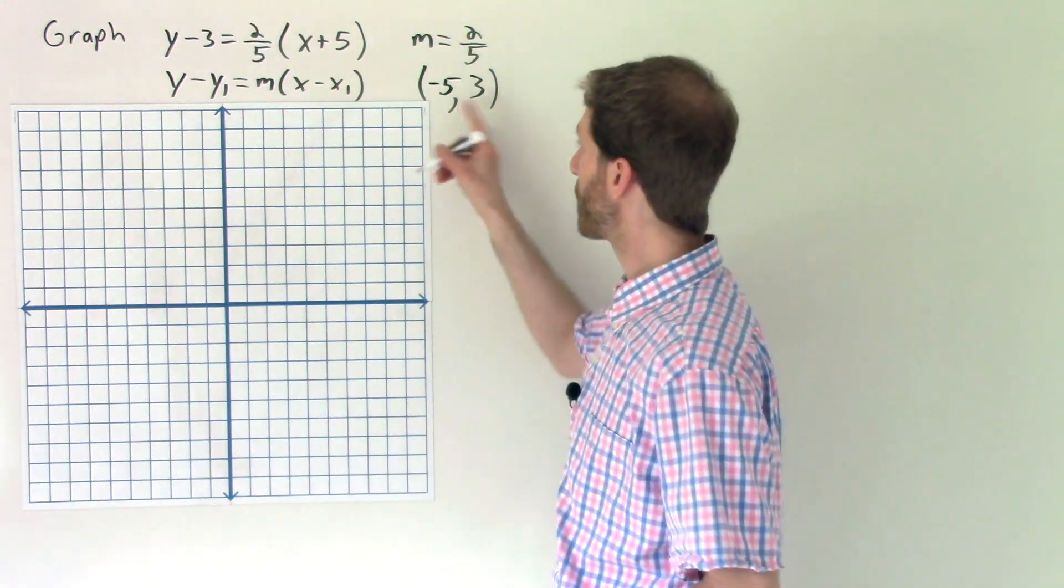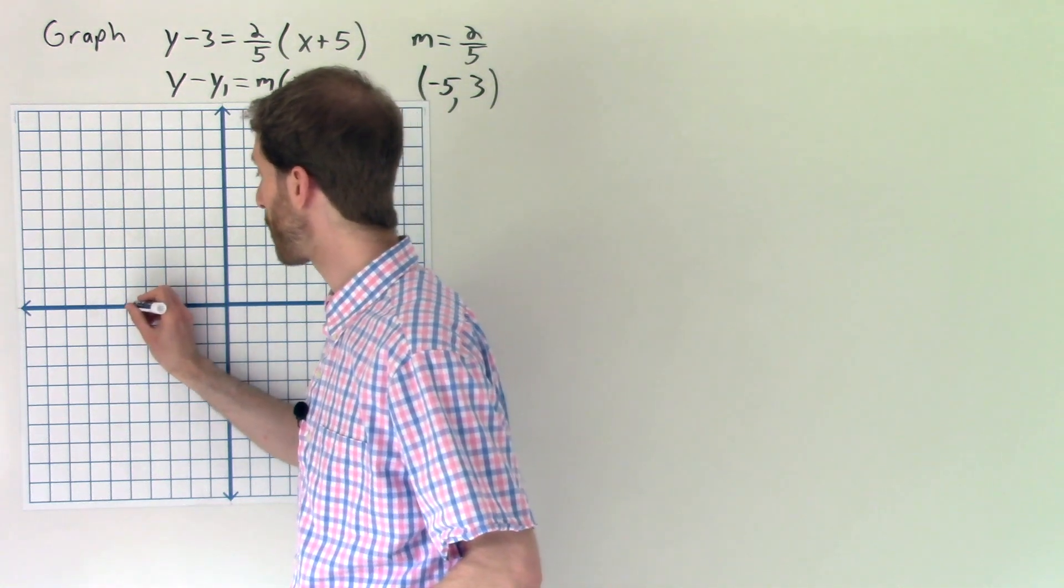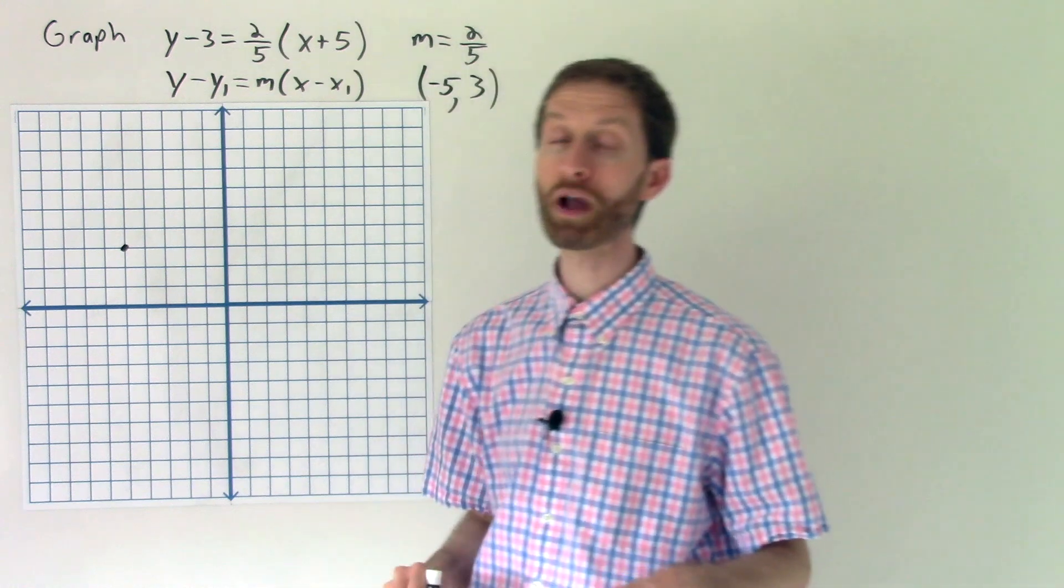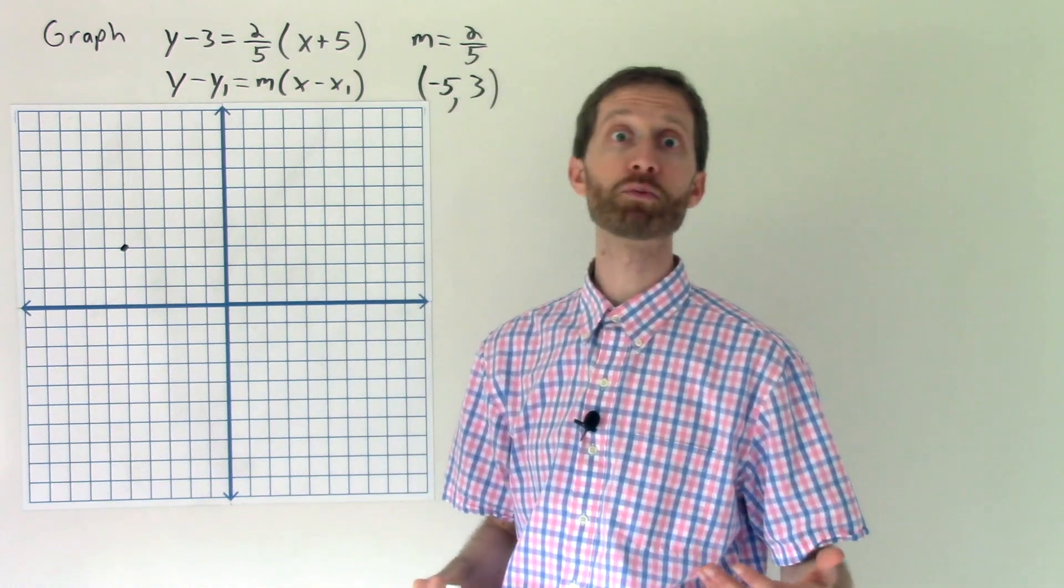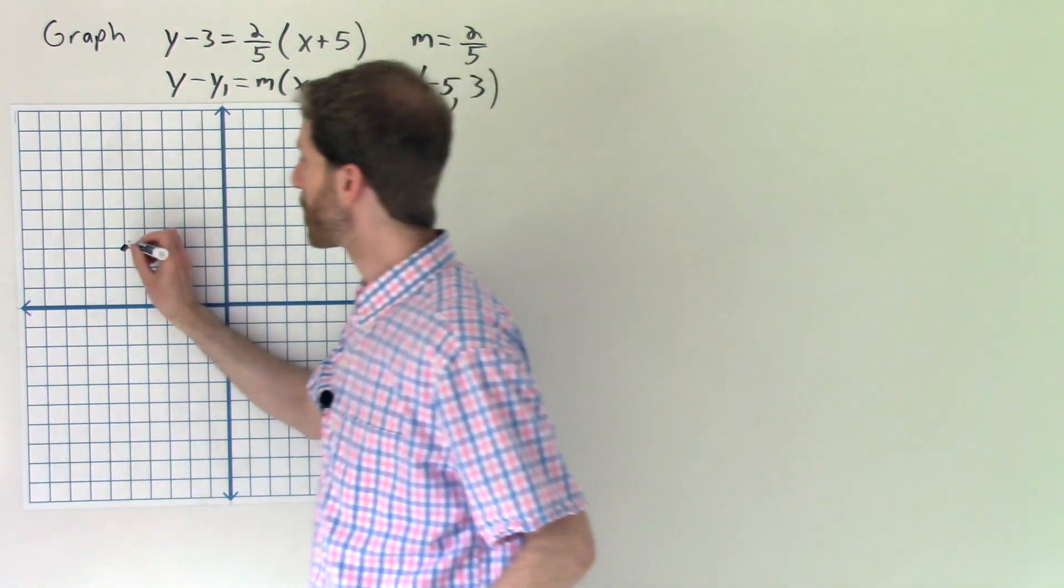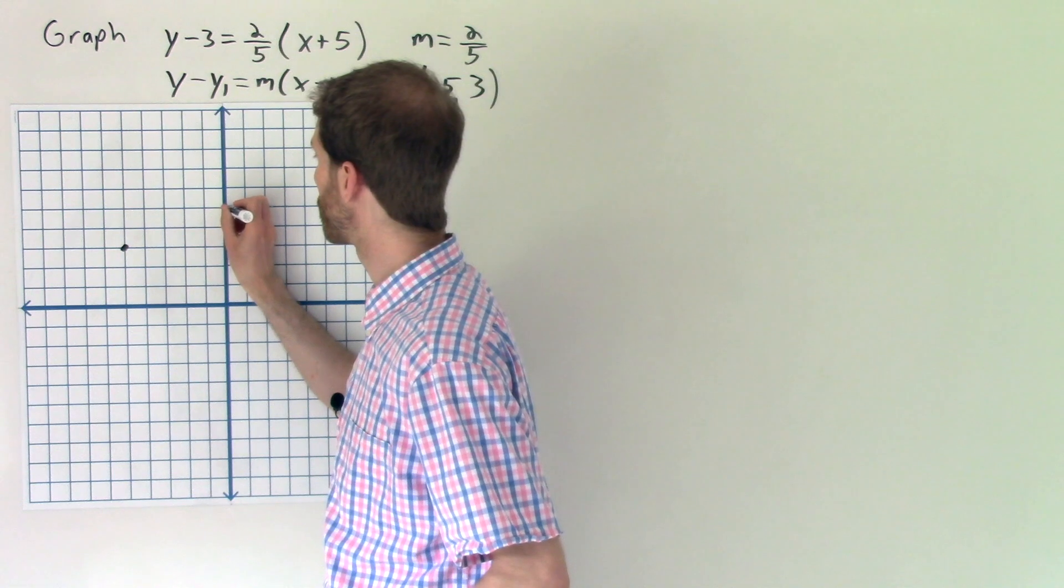Let's graph it. Negative 5, 3 is a location on the line. So that's over 1, 2, 3, 4, 5. Up 1, 2, 3. And now the slope will basically direct us as to how to find other points on the line. We're going to rise 2 and run 5. So that'll be rise 1, 2, run 1, 2, 3, 4, 5. Bam.